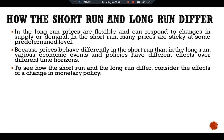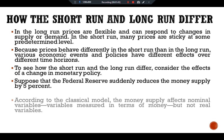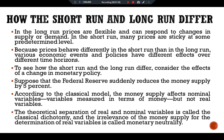To see how the short run and the long run differ, consider the effects of a change in monetary policy. Suppose the Federal Reserve suddenly reduces the supply of money by five percent. According to the classical model, the money supply affects nominal variables — variables measured in terms of money — but not real variables. This theoretical separation of real and nominal variables is called the classical dichotomy, and the irrelevance of the money supply for real variables is called monetary neutrality.